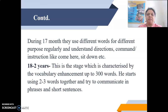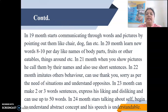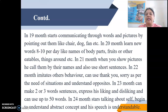From 18 months to 2 years, this stage is characterized by vocabulary enhancement up to 300 words. The child starts using 2 to 3 words together and tries to communicate in phrases and short sentences. In the 19th month, they start communicating through words and pictures by pointing at objects like chair, dog, fan, etc. In the 20th month, they learn 8 to 10 new words per day, like names of body parts, fruits, or other eatables and things around them.